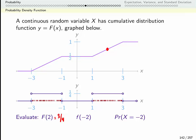Little f of negative two is asking for my probability density at negative two. That's this bottom function. And that's one quarter.